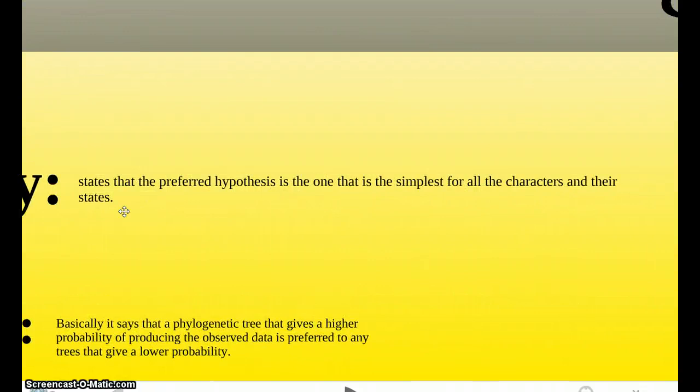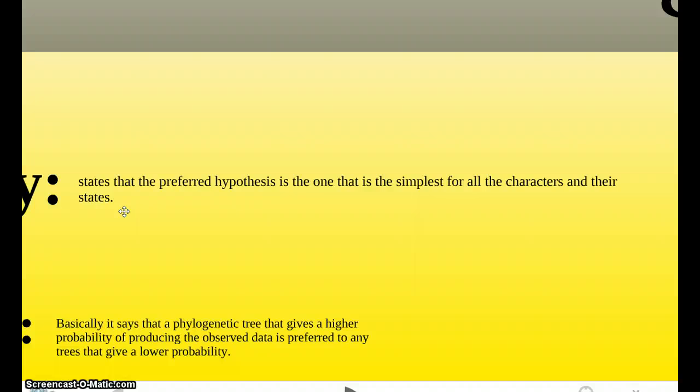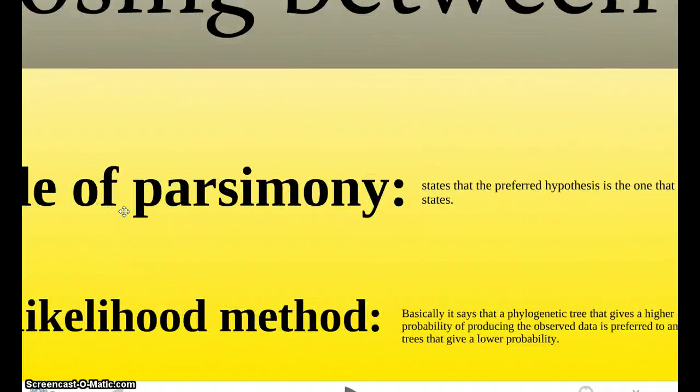The first is the principle of parsimony. This states that the preferred hypothesis or cladogram is the one that is the simplest for all characters and their states. Basically it's saying that if you have two cladograms, and one is simple, short, to the point, and everything makes sense, and if you have one that is really complex and controversial, you'll obviously follow the principle of parsimony and choose the one that is simple, the simplest.